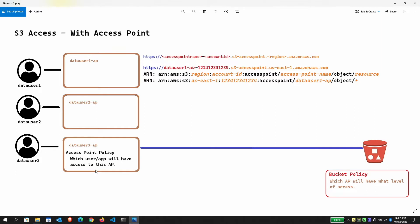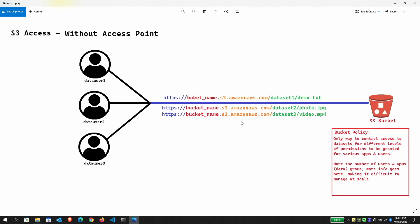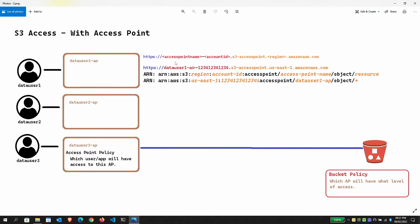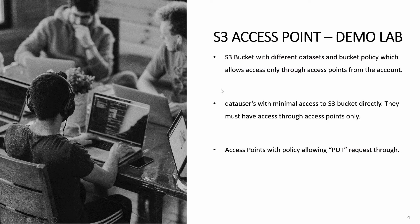Every access point you create has an access point policy associated with it, controlling which user or application can access that access point. The bucket policy then defines what level of permission each access point has. Once created, data users will each have their own personalized endpoint — their own access point — instead of sharing a single bucket endpoint.